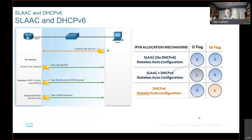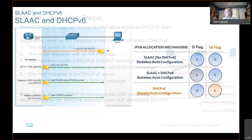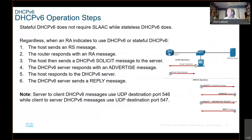And then there's stateful — that's where it's managed, the M flag is set, the other two are not set. In that case, the router responds with a stateful DHCPv6 message just saying go talk to the DHCPv6 server. So the PC reaches out to the router, the router responds back with a router advertisement, and the PC is then able to get the address completely.